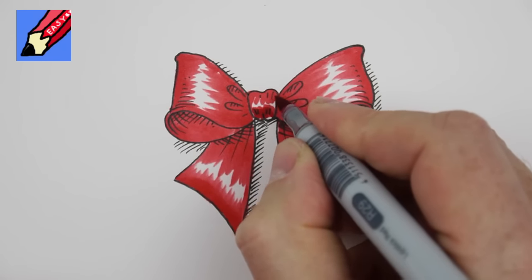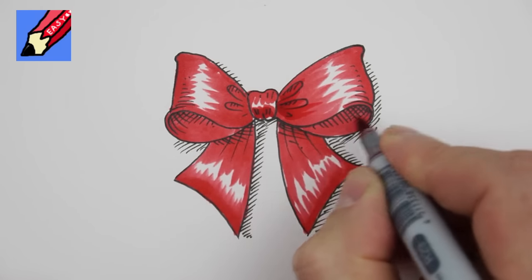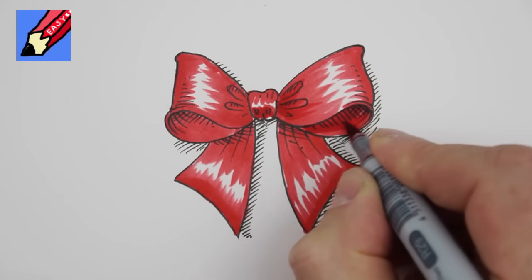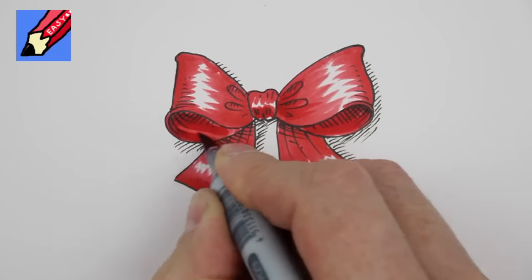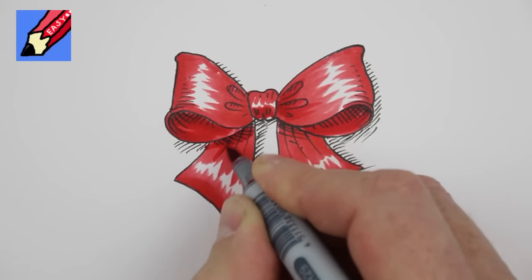If you've got a darker red, you can always sort of add an extra bit and color in those areas underneath. That will just kind of bring it to life a little bit like that.